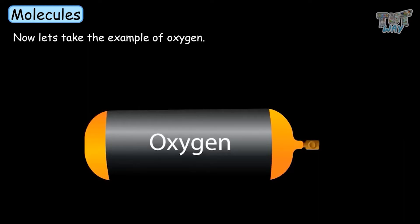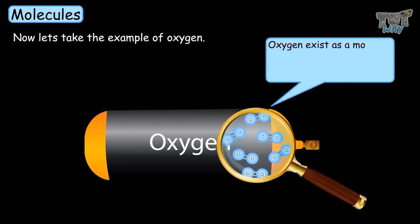We learned that oxygen only has oxygen atoms. Now in the case of oxygen, oxygen exists as a molecule that has two oxygen atoms bonded together.